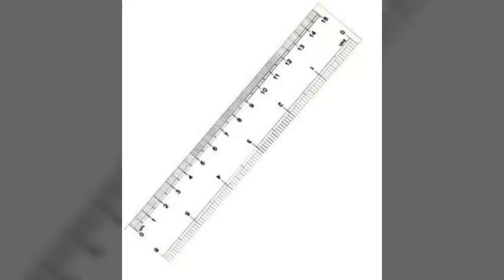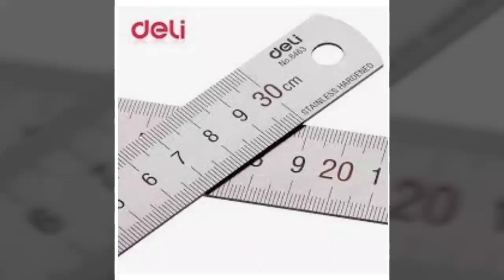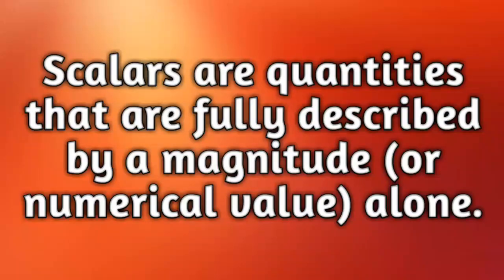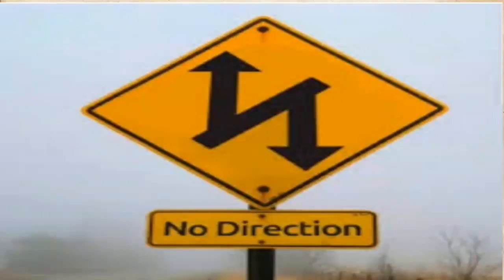Let's see this picture. The scale contains numerical values. If we change the direction of the scale, the values cannot be changed. Like this, scalars are the quantities that are fully described by a magnitude — numerical values alone — not by any directions.